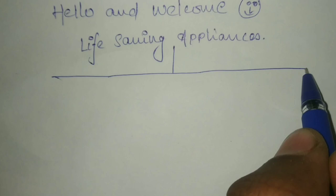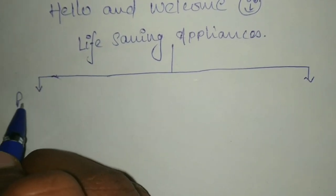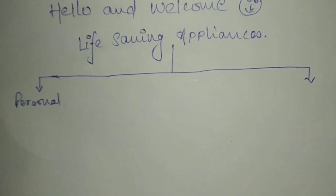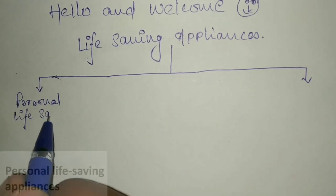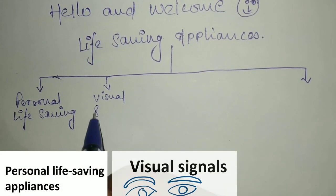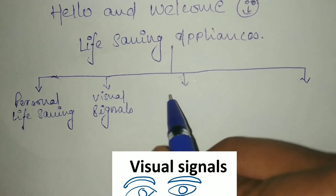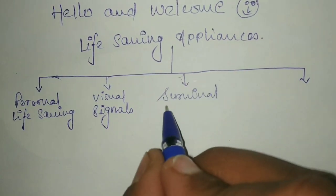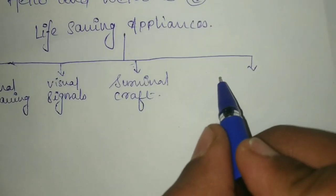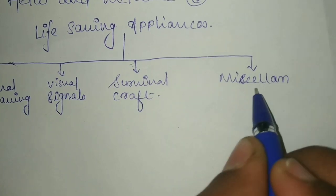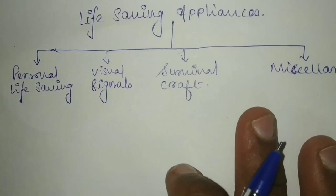These life-saving appliances can be divided into four types: personal life-saving appliances, visual signals, survival craft, and some other miscellaneous life-saving appliances. First, we will see what are the different types of personal life-saving appliances.